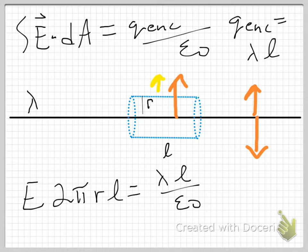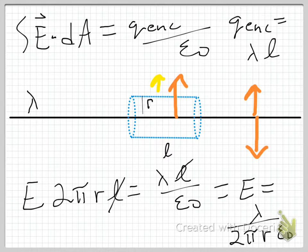You can see some mathematical magic happens here. My L's are going to cancel. And if I divide through by the 2 pi r, what that leaves me with is that the E field is equal to lambda over 2 pi r epsilon naught.